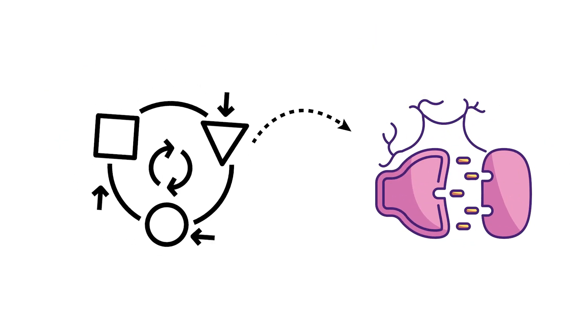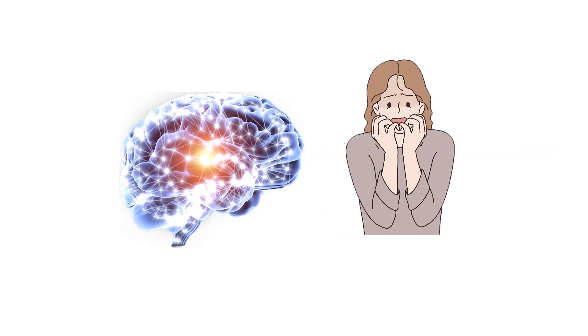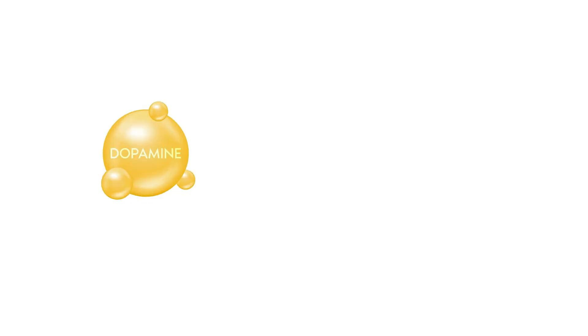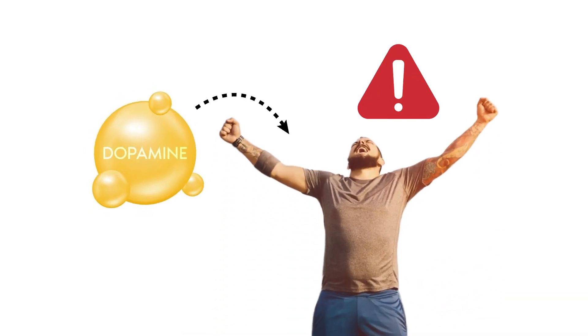The change also affects neurotransmitter balance. Ketones seem to boost GABA activity, which calms overactive brain circuits and lowers anxiety. Meanwhile, dopamine becomes more responsive, resulting in increased motivation and alertness.